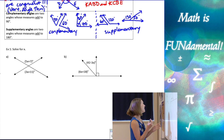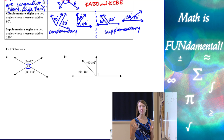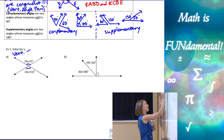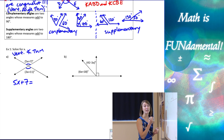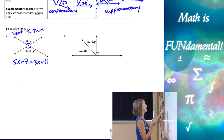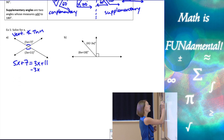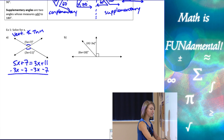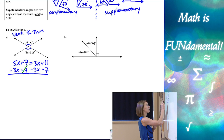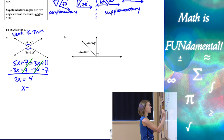The example says solve for X. We have vertical angles, and we know the vertical angle theorem says those two angles have to be congruent. To solve for X, we can set them equal to each other — because congruent angles have the same measure — giving us 5X plus 7 equals 3X plus 11. Combining like terms, 2X equals 4, so X is 2.